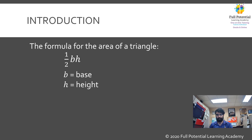The formula for the area of a triangle is one-half bh, where b is the base of the triangle and h is the height of the triangle. What does this mean? Let's consider some examples.